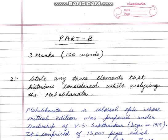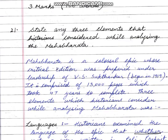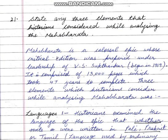Let us start. Question number 21: State any three elements that historians considered while analyzing the Mahabharata. That means three things which historians consider when they analyze the Mahabharata.